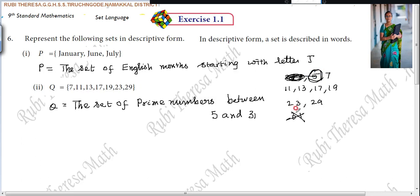Here 5, here 31. Between 5 and 31, the set of prime numbers between 5 and 31. Next subdivision.